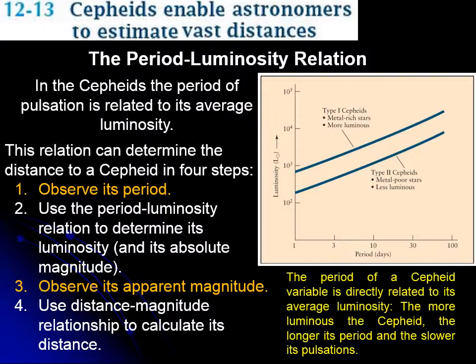The Cepheids come in two different flavors. There will be some Cepheids with one relationship of luminosity to period and some other Cepheids with a different relationship. The type one Cepheids tend to be more metal rich — in other words they have elements that were produced in a previous star, so a kind of recycled gas — and they are about ten times more luminous than the type two Cepheids, which are metal poor.